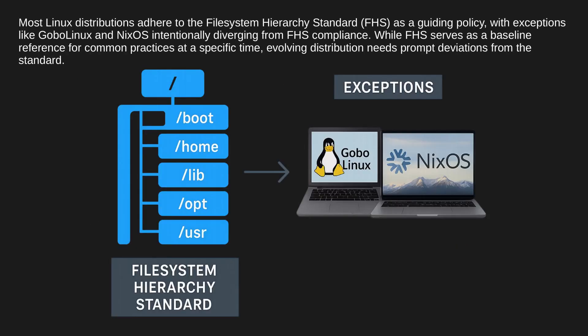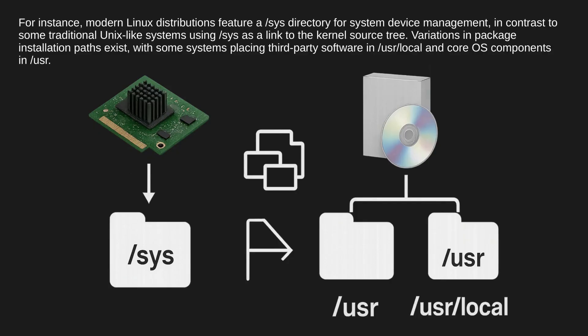Most Linux distributions adhere to the File System Hierarchy Standard as a guiding policy, with exceptions like Gobo Linux and NixOS intentionally diverging from FHS compliance. While FHS serves as a baseline reference for common practices at a specific time, evolving distribution needs prompt deviations from the standard. For instance, modern Linux distributions feature a /sys directory for system device management, in contrast to some traditional Unix-like systems using /sys as a link to the kernel source tree. Variations in package installation paths exist, with some systems placing third-party software in /usr/local and core OS components in /usr.